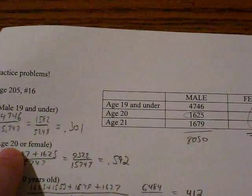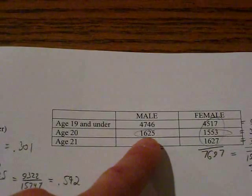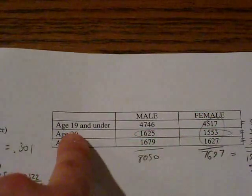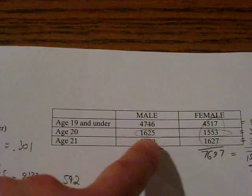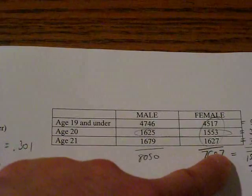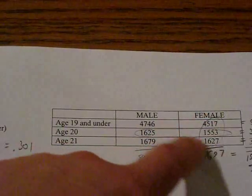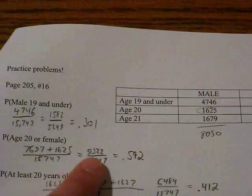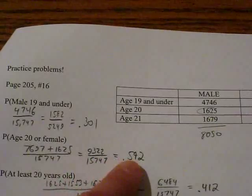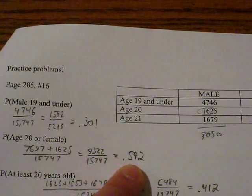Now what if you are 20 or female? Now see, this is an interesting thing. Take a look at your chart. They want basically anyone who's age 20 or female and you'll notice that these are not mutually exclusive because you can be 20 and female at the same time. So my suggestion is to take the total female here which is 7,697 and add your 1,625 to that, which is the same thing as adding these four circled things up, which is 9,522 over 15,747. That's our total again. Which isn't simplifiable but the decimal is going to be 0.592, about 59%.